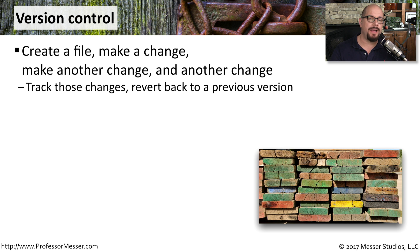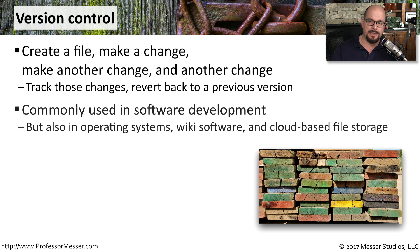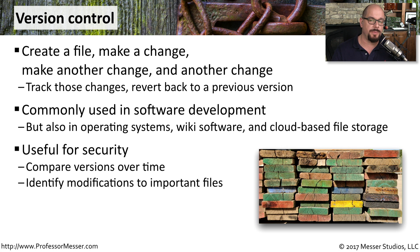With version control, you can track the changes that are made to a particular file. You can make change after change after change, and then go back and look at all of the different changes that have been made over time. We commonly see this used with software development, but also in the operating systems and cloud-based storage functions available to us. This is very useful from a security perspective because you can compare how things have changed over time, and if certain files were modified, you can see exactly how and when those files were changed.